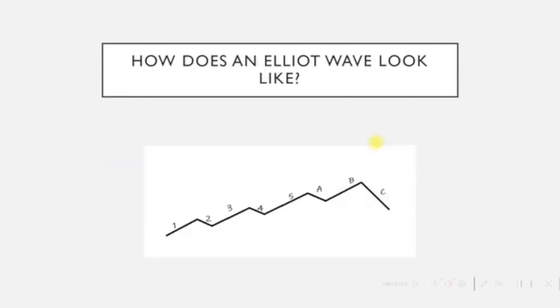Now let us take a look at the figure. In the figure, waves 1, 3, and 5 are impulse waves because they are in the direction of market movements, and waves 2 and 4 are corrective waves because they are against the market movements.